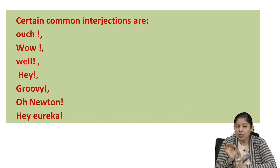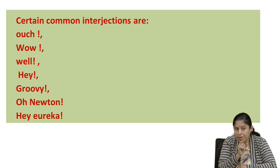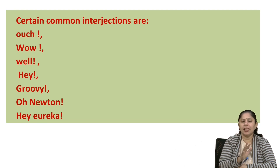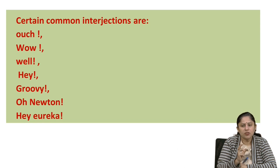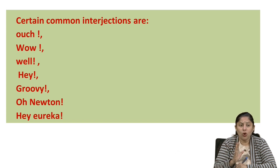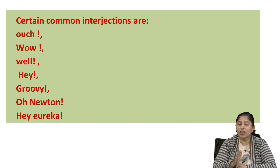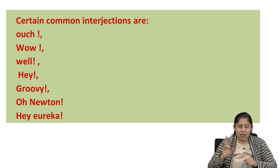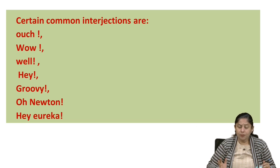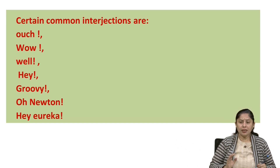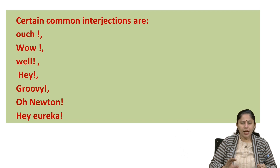You have to be very alert while putting interjections in written data because they require exclamatory marks, and sometimes commas, semicolons, or colons. All these punctuation marks become very useful when using interjections in written format. You can speak interjections freely, but you must be very alert while writing them. There are rules we are going to discuss right now.